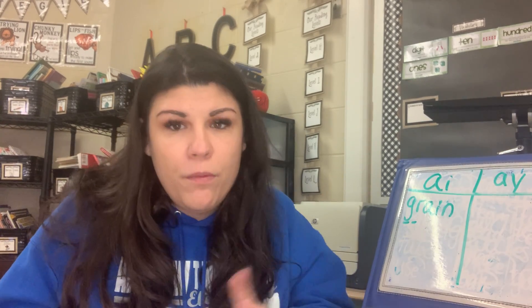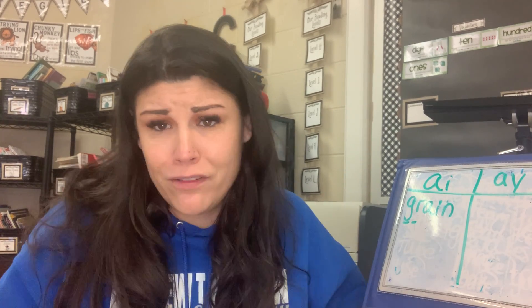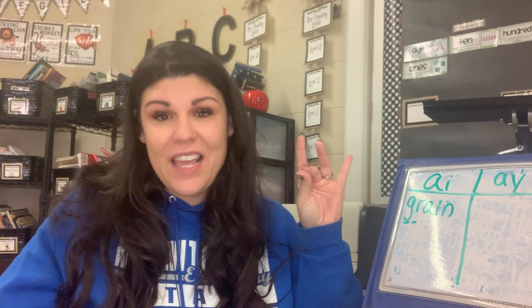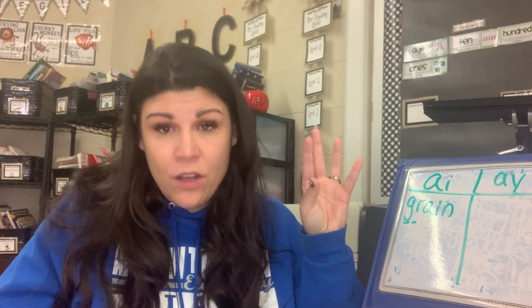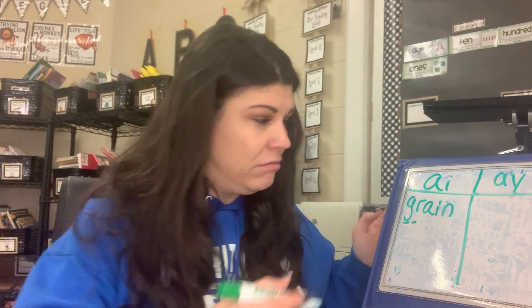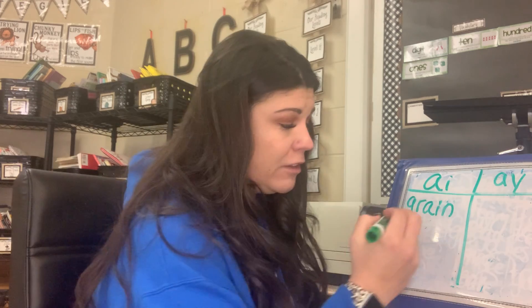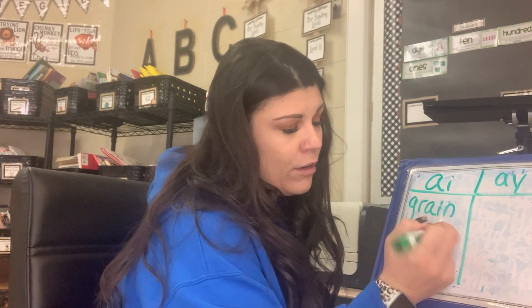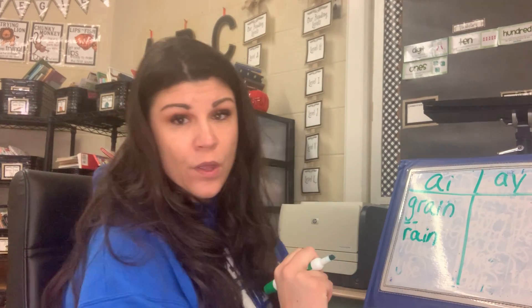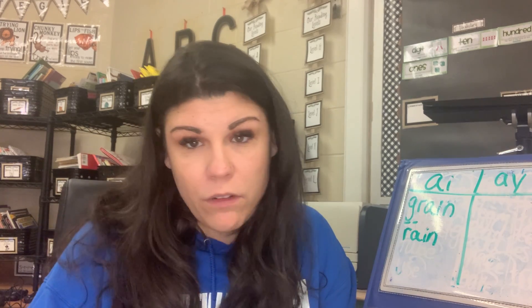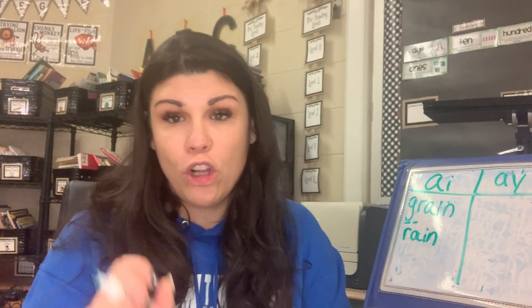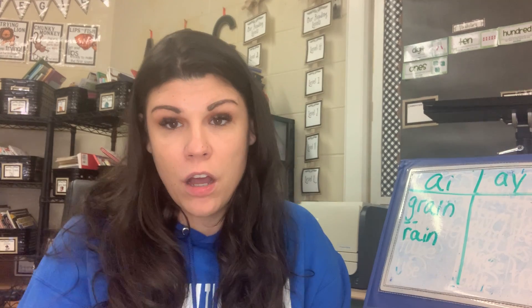If we can spell grain, we can spell the next word because we're just getting rid of the G. Rain. R-A-I-N. Rain. I don't like the rain. AI is in the middle of the word.